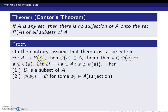Since ψ is a surjection, corresponding to every element in P(A), there exists an element in capital A such that ψ maps that element to it. Since D is a subset of A, D is an element of P(A), so there exists an element a₀ in capital A such that ψ(a₀) = D. This is possible since we assumed ψ is a surjection from A to P(A).